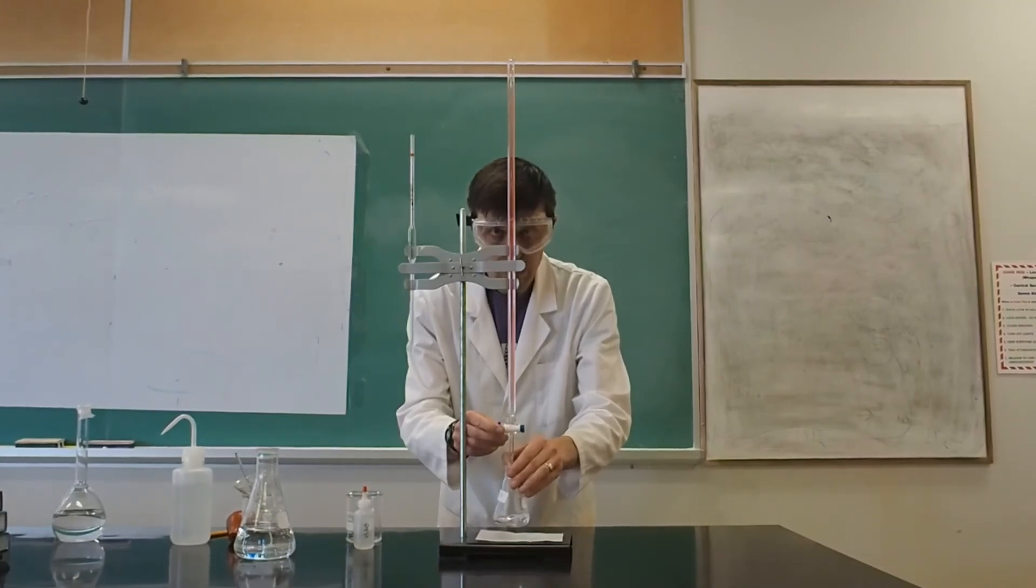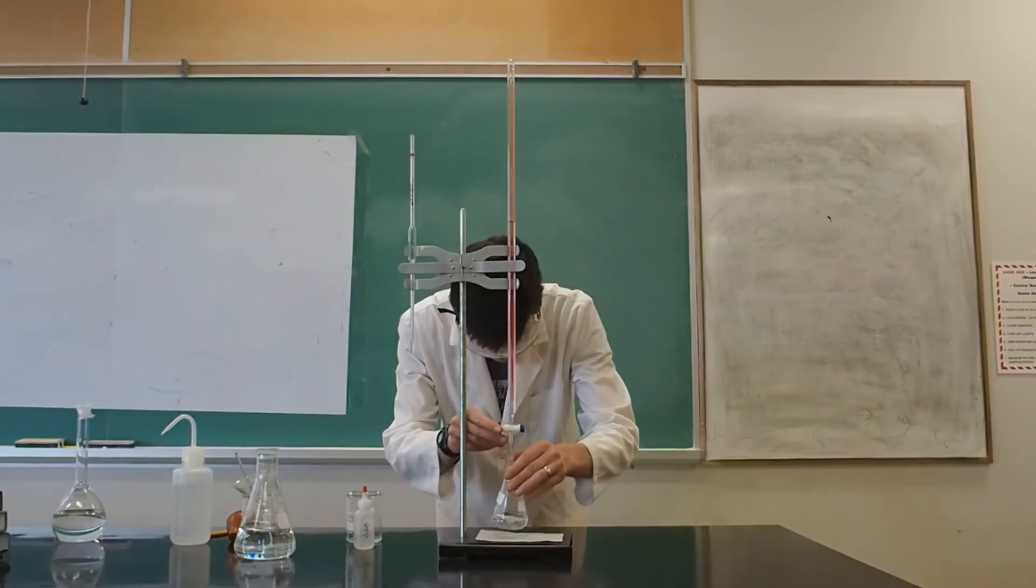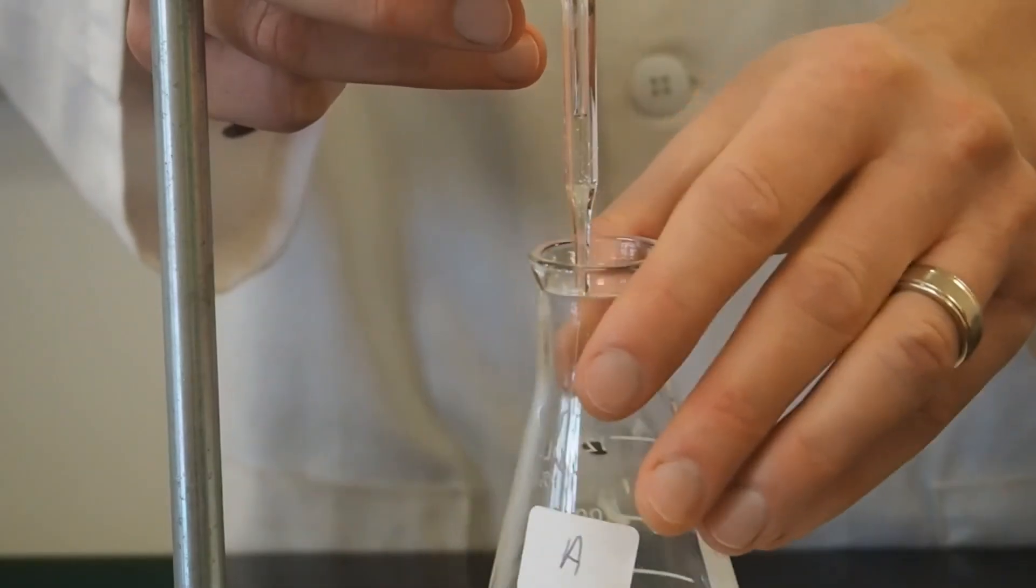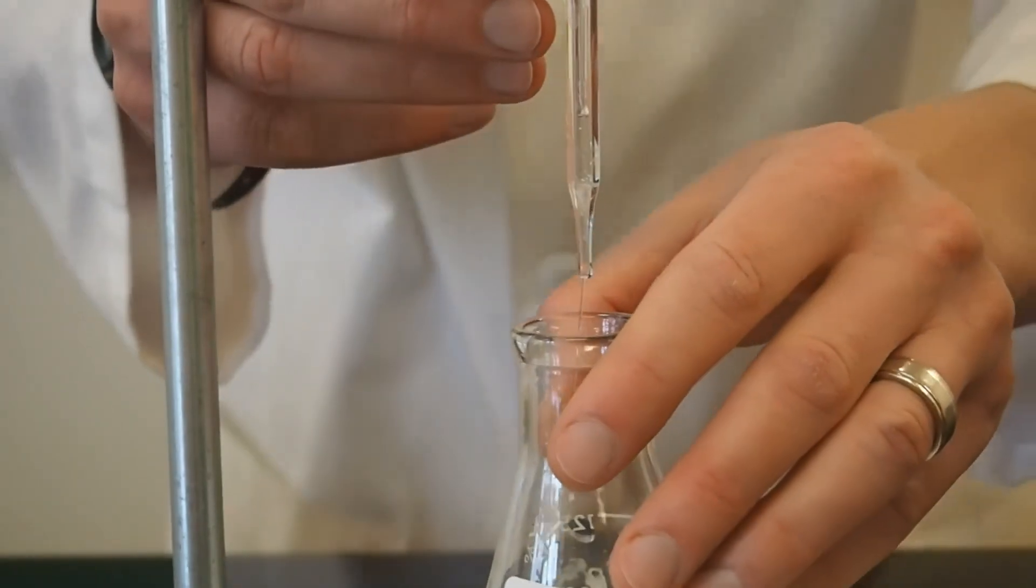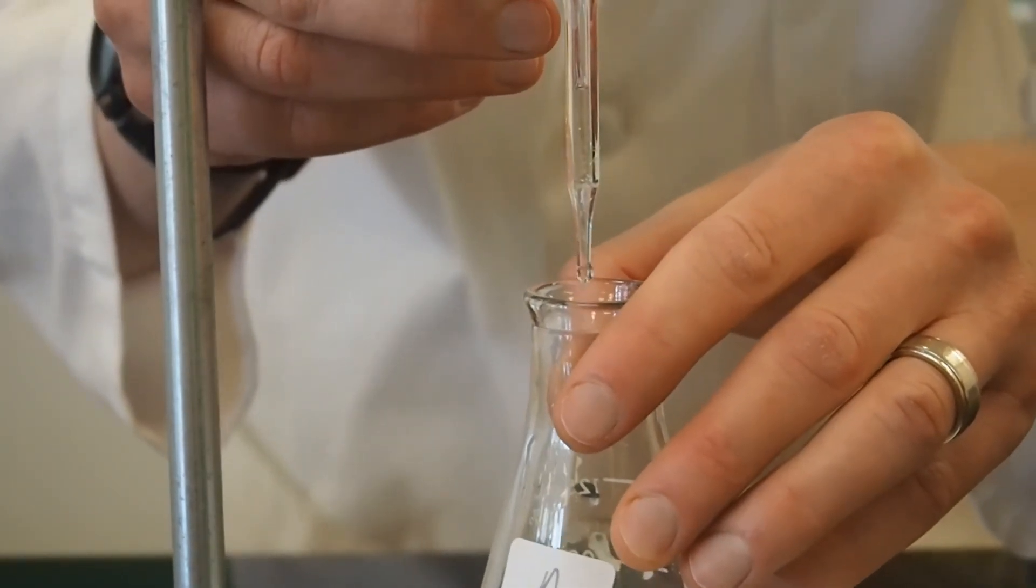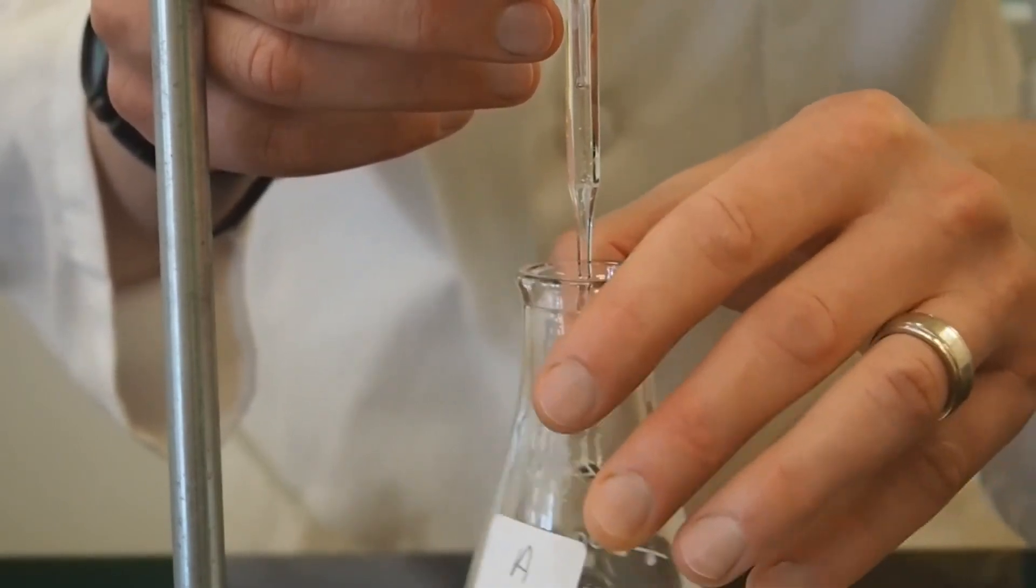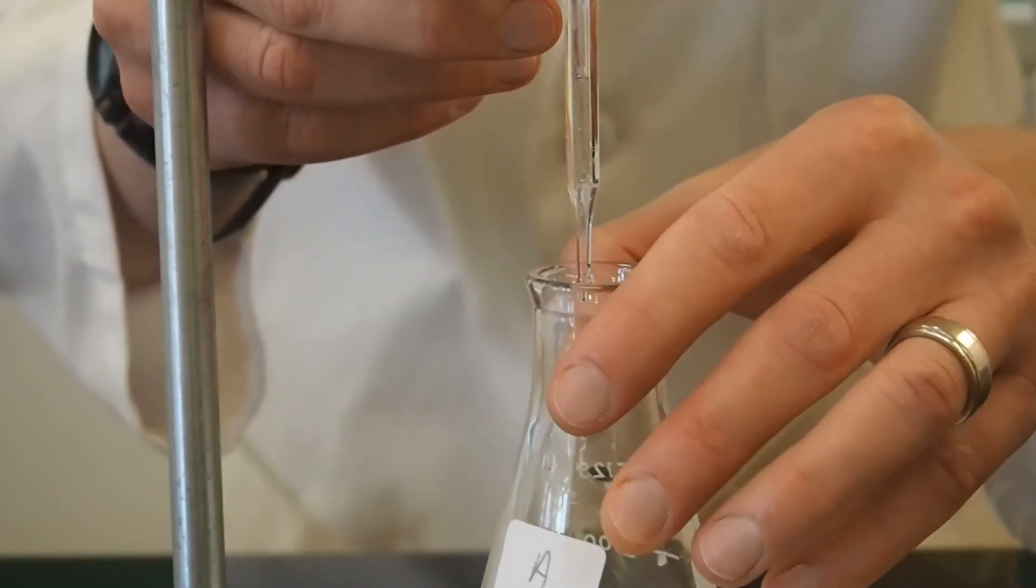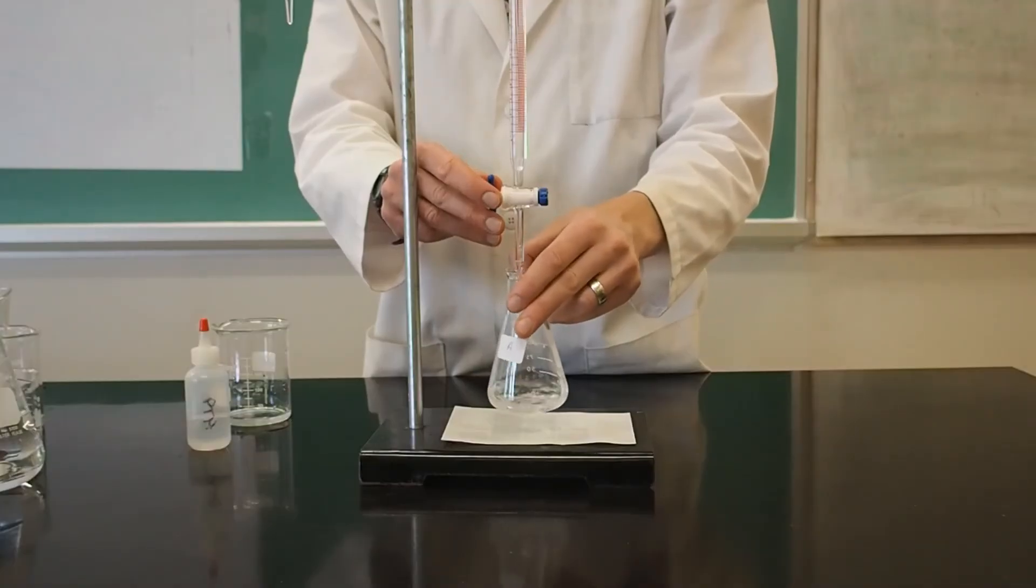The first trial will be what I call a quick and dirty trial. Here, our aim is not precision, but only to get an estimate of how much titrant is going to be required to reach the end point. This type of trial is not always used. However, it often saves time in the long run by getting an estimate of where to expect the end point.